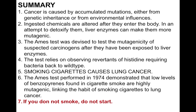In summary, cancer is caused by accumulated mutations, either from genetic inheritance or from environmental influences. Ingested chemicals such as those found in cigarette smoke are altered after they enter the body. In an attempt to detoxify them, sometimes liver enzymes can make them more mutagenic. The AIMS test was devised to test the mutagenicity of suspected carcinogens after they have been exposed to liver enzymes, and this test has been used over and over again by many different investigators to test the mutagenicity of many different types of toxic substances. The test relies on observing revertents of histidine-requiring bacteria back to wild type. The AIMS test performed in 1974 demonstrated that low levels of benzopyrenes found in cigarette smoke are highly mutagenic, linking the habit of smoking cigarettes to lung cancer.